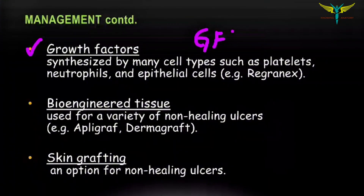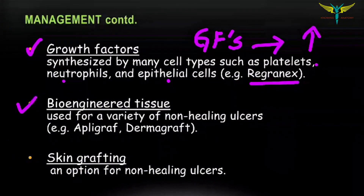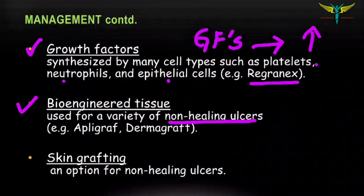Enzymatic agents are added to dressings to break down necrotic tissue. Growth factors are also used and are helpful in cases of long-standing venous ulcers to make healing faster. These growth factors are synthesized by cell types such as platelets, neutrophils, and epithelial cells. The most commonly used growth factor is Regranex.